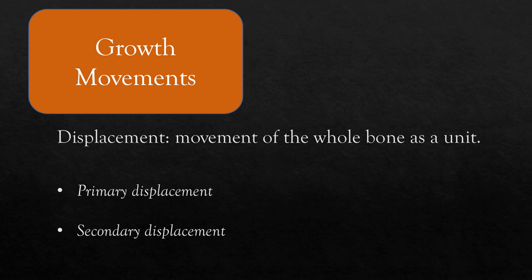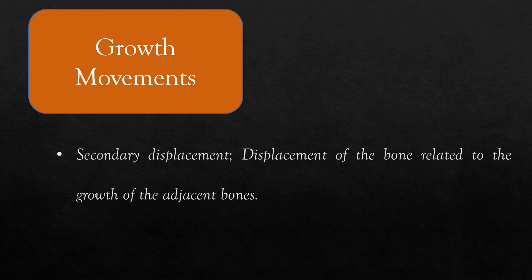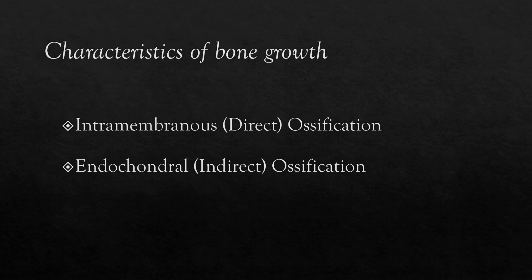Displacement is the movement of the whole bone as a unit. There are two types of displacement: primary and secondary. Primary displacement is the displacement of the bone related to its own growth. The bone grows with two methods based on the differentiation of mesenchymal tissue: intramembranous or endochondral ossification.